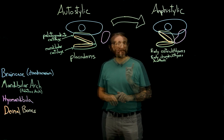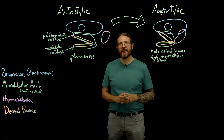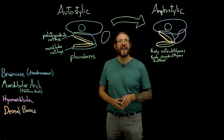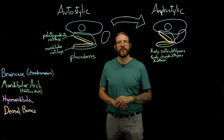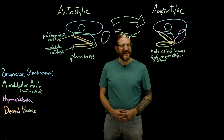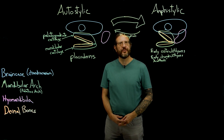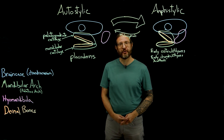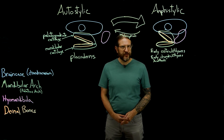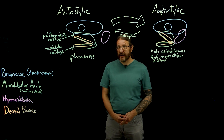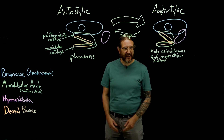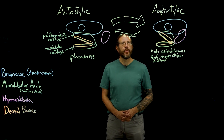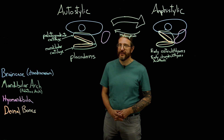From there, three things happen. Somewhat entertainingly, the chimera lineage — Holocephali — decides that amphistylic isn't really where it's at, and they revert to the primitive autostylic condition. That's reflected in the scientific name for their taxon: Holocephali means 'whole heads' and refers to the fusion of the upper jaw with the chondrocranium. Two other major lineages of fishes, Elasmobranchii and Osteichthyes, independently evolved something called hyostylic from the amphistylic condition. Hyostylic turns out to be one of the most important innovations in the history of fishdom.